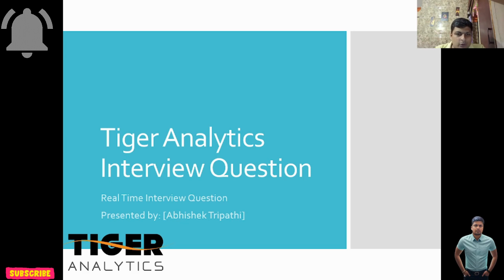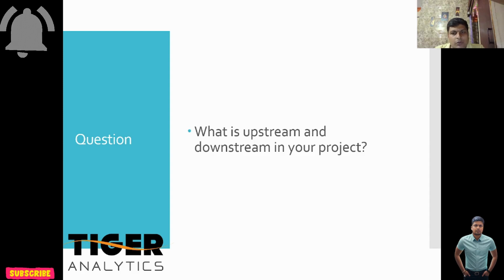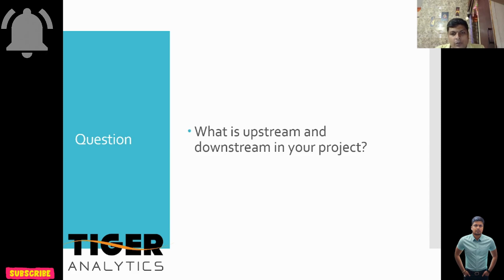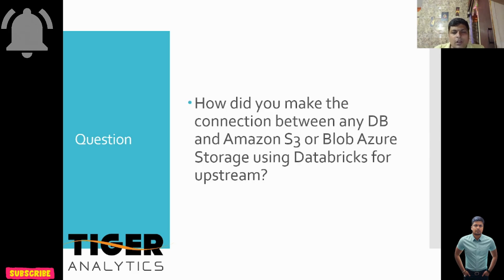The first question they asked is: what is upstream and downstream in your project? Upstream means where you are pulling data from — what is your source. Downstream means where you want to dump the data, such as an on-premise database, Delta Lake, or any AWS storage. You have to explain this clearly.